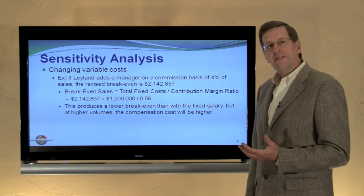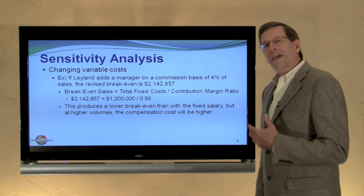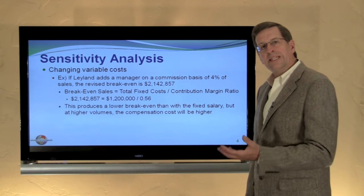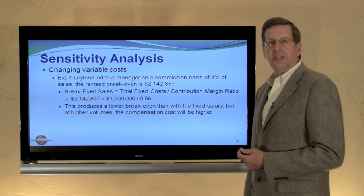We can also look at changes in variable cost. If Leland adds the sales manager but instead of paying them a salary, instead pays them a commission of four percent of sales, then the revised break-even is two million one hundred forty-two thousand eight fifty-seven. This results by dividing the continuing fixed cost of one million two hundred thousand by the revised contribution margin ratio of 0.56 — instead of a 60 percent contribution margin we only have 56 percent because each additional dollar of sales incurs another four cents of commission.